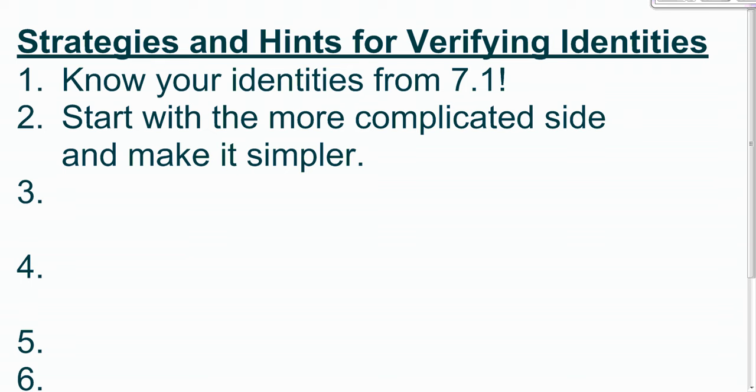Start with the more complicated side and make it simpler. Unlike relationships with other people, where getting complicated is a very easy thing to do because you can say something wrong or be mean or something like that. In math, it's much easier to make things simpler than knowing where you need to make things more complicated to get something specific.